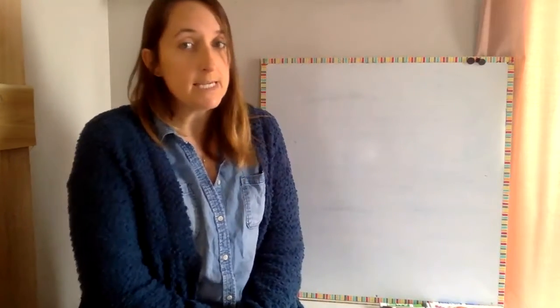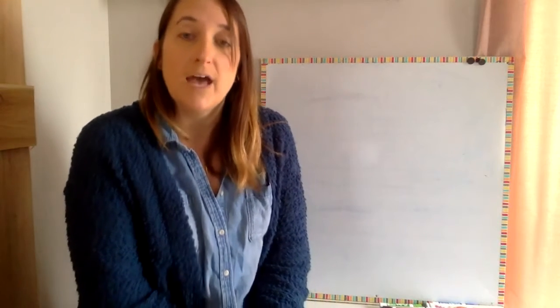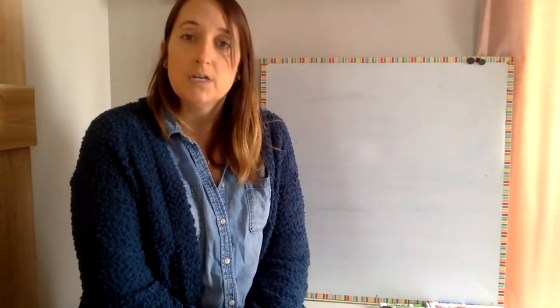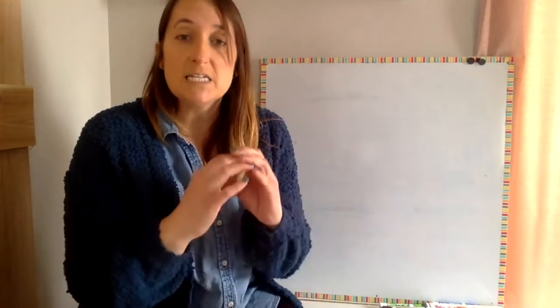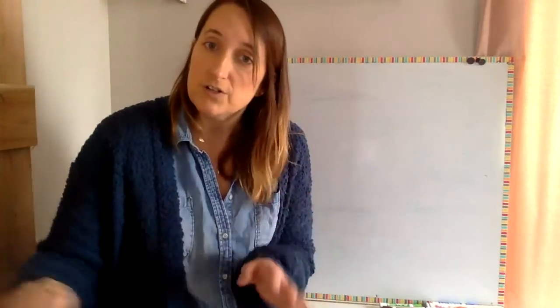Hi friends. So earlier we read a story called The Tiny Seed. Do you remember what happened in that story? It started out with some seeds that floated away onto the wind for a while, and then they finally landed. Some of the seeds grew into plants and then into flowers. And then at the end of the book, the big giant flower had the seed pod in the middle, and that broke open and those seeds flew out again and it started all over again.